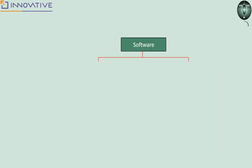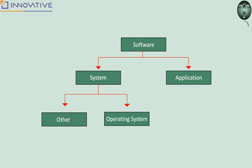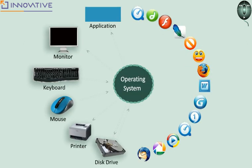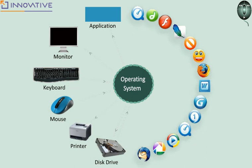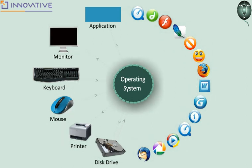Software is broadly classified into two types. One is system software, which is used for running a system — for example, the operating system. The other type is application software, which is typically used by the end user for day-to-day tasks. Both hardware and software are handled by the primary software called the operating system — the OS.